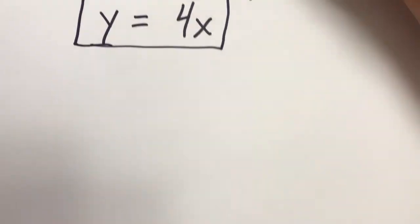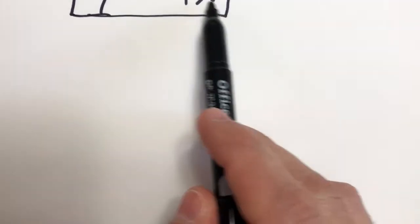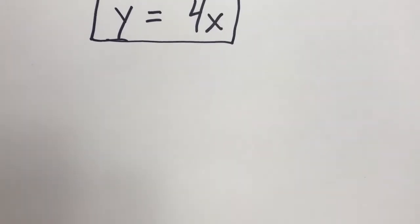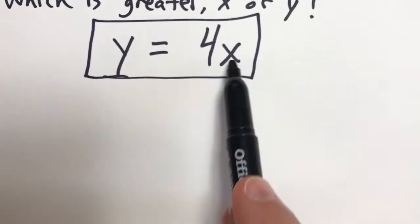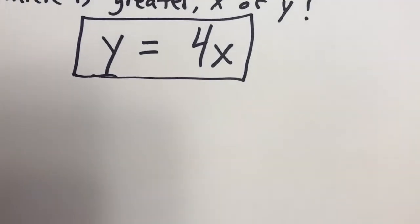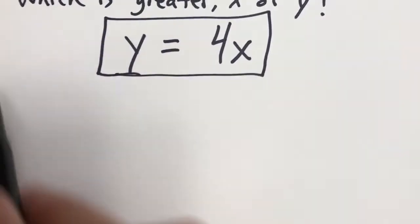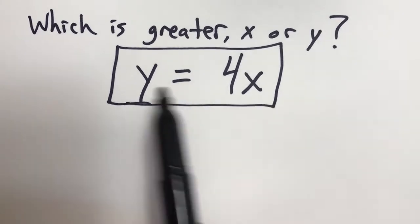Now, some students might say that x is going to be greater because it's multiplied by 4. Whereas another student might say, it's going to depend on what the value of x is and what the value of y is. So I want you to think about, what do you think the greater variable will be, x or y?